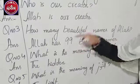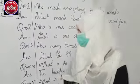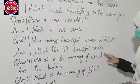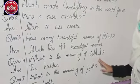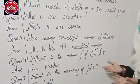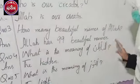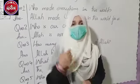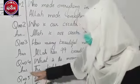Question number 4 is: what is the meaning of Al-Baatinu? It is an Arabic word and its meaning is 'the hidden.' So the answer is: Al-Baatinu means the hidden.